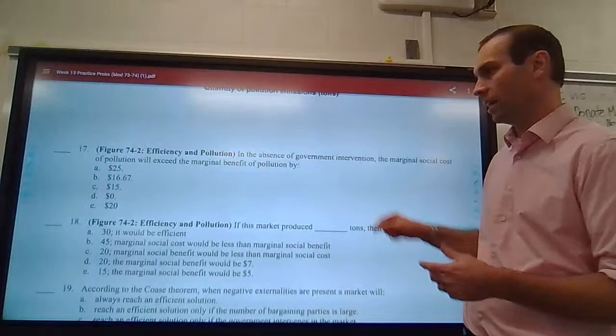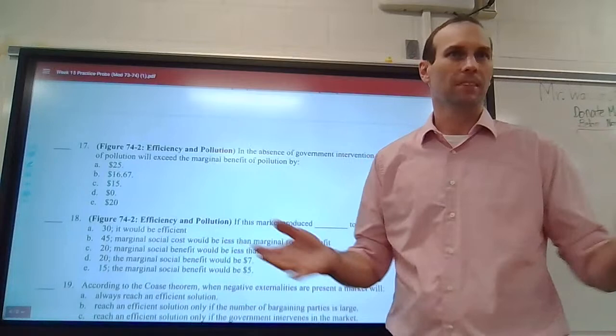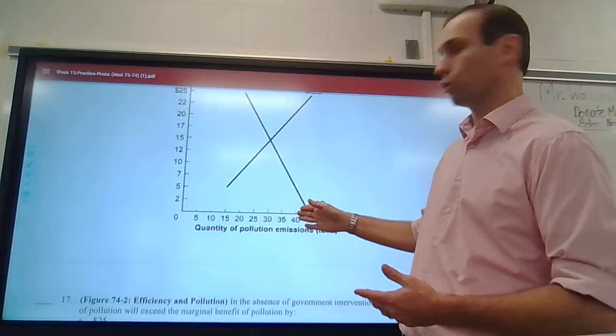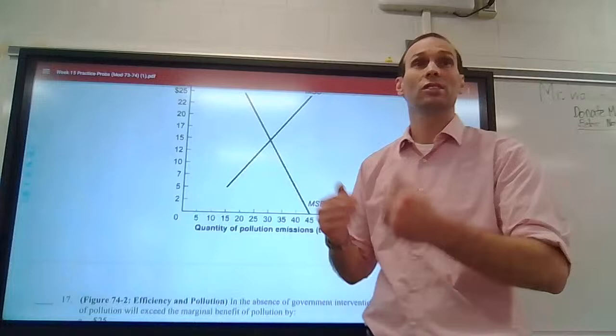If this market produced 30 tons, it would be efficient — yes, that's it. Because that is the socially optimal quantity, where marginal social cost equals marginal social benefit. Any quantity greater would be inefficient because the cost is greater than the benefit, and any quantity less would be inefficient because the benefit is greater than the cost and we should pollute more.